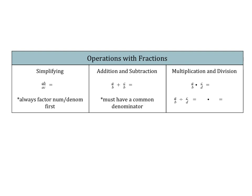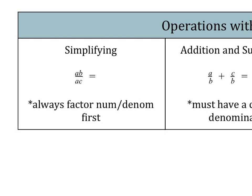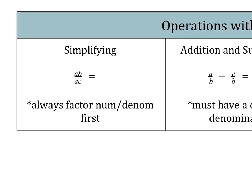We're going to do a quick review of our rules for operations with fractions, and then we're going to see if we can apply these rules to our more complex rational expressions. For simplifying, our job is to look for common factors within the numerator and denominator. So if you have AB over AC, that would leave us with B over C when simplified. Make sure to factor the numerator and denominator first, and then look for common factors.